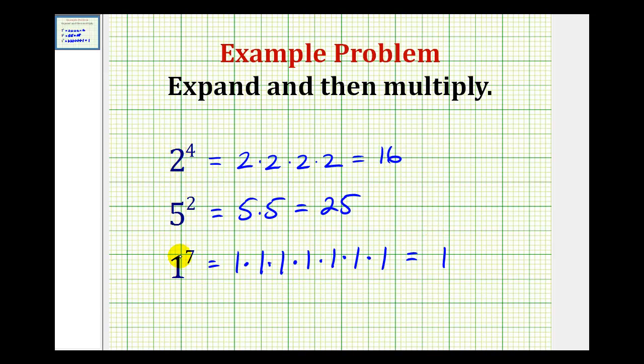So again, notice in exponential form, the base tells us our factor and the exponent tells us how many factors we're multiplying. Here we have four factors of two. Here we have two factors of five. And here we have seven factors of one.